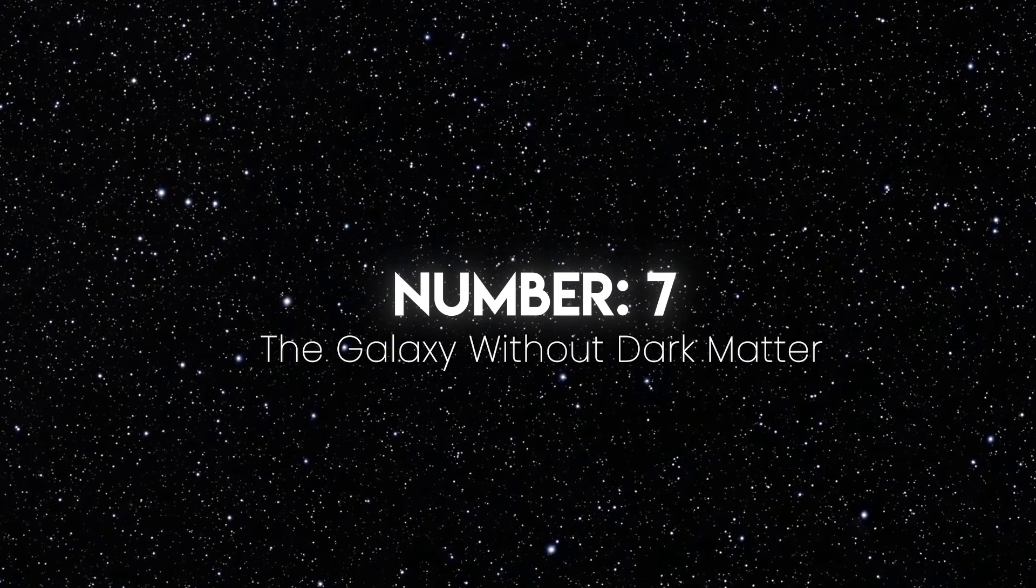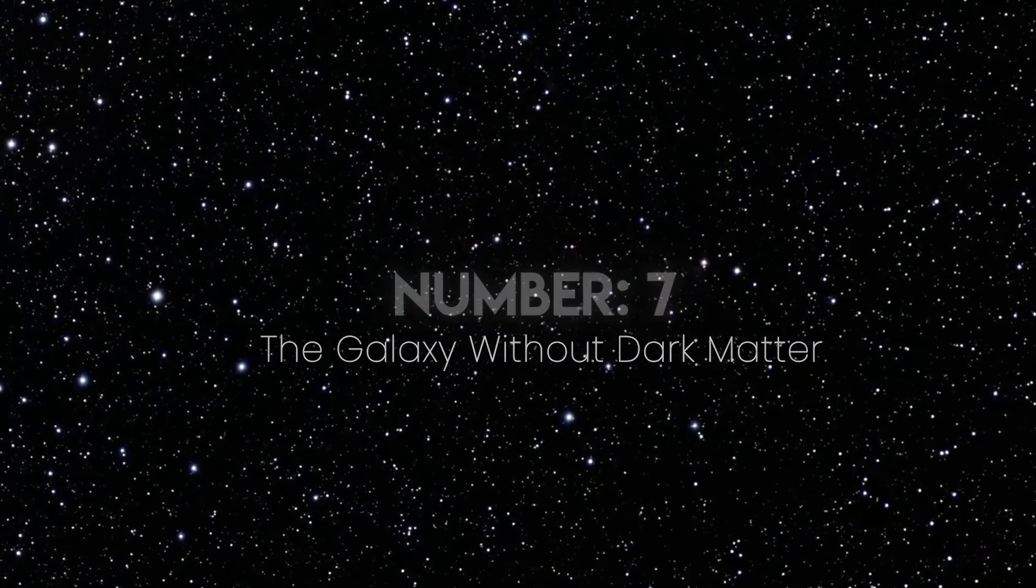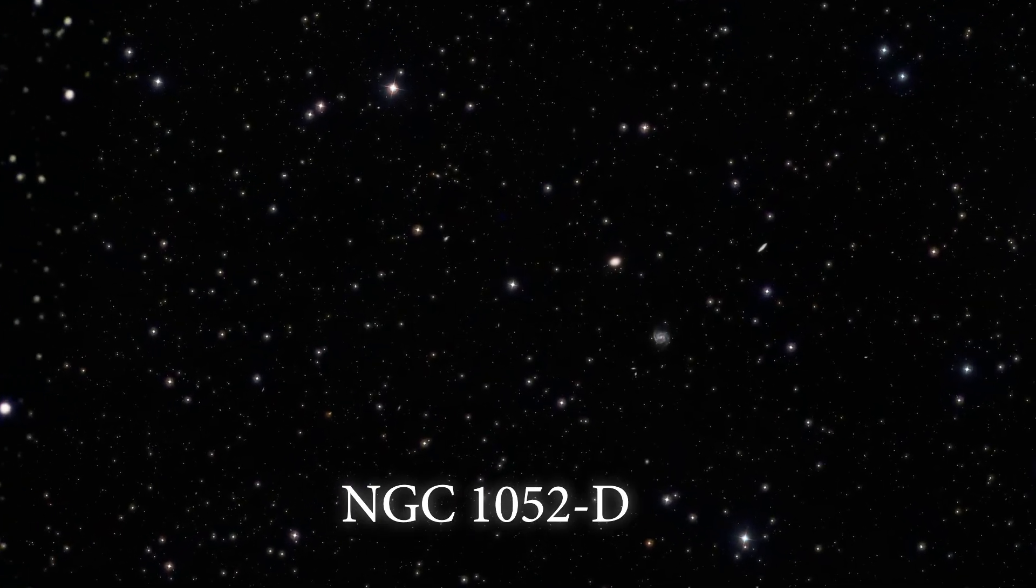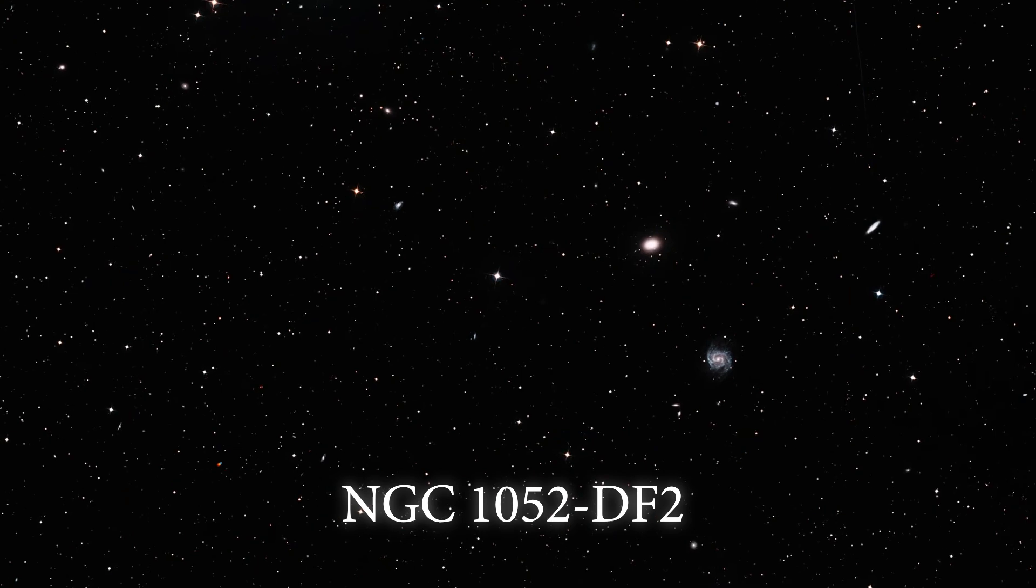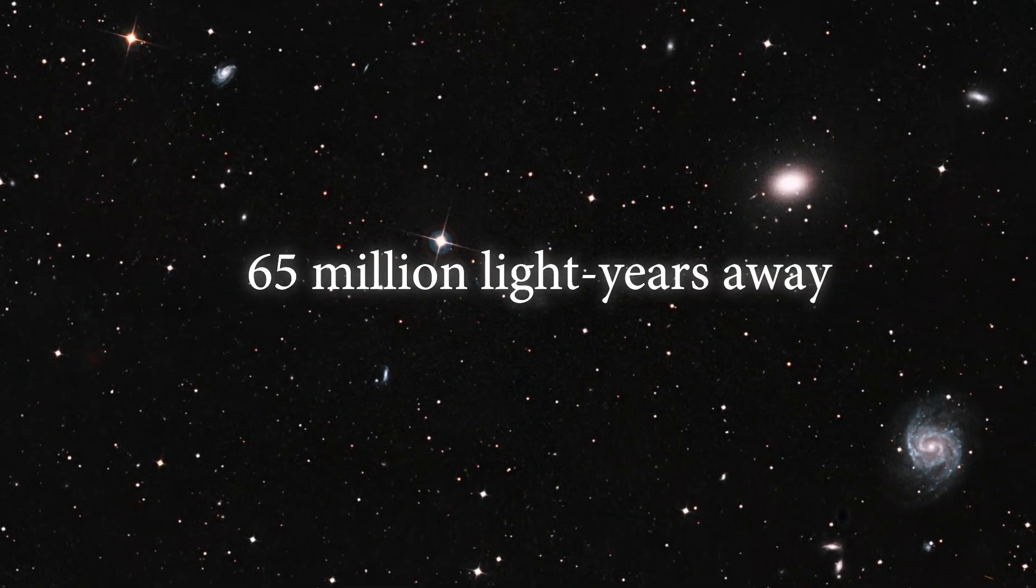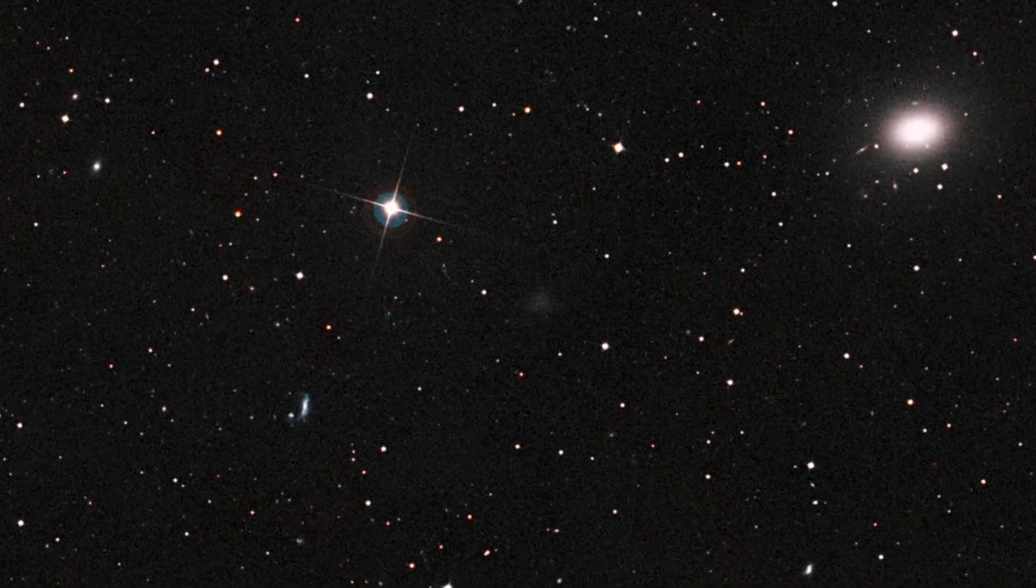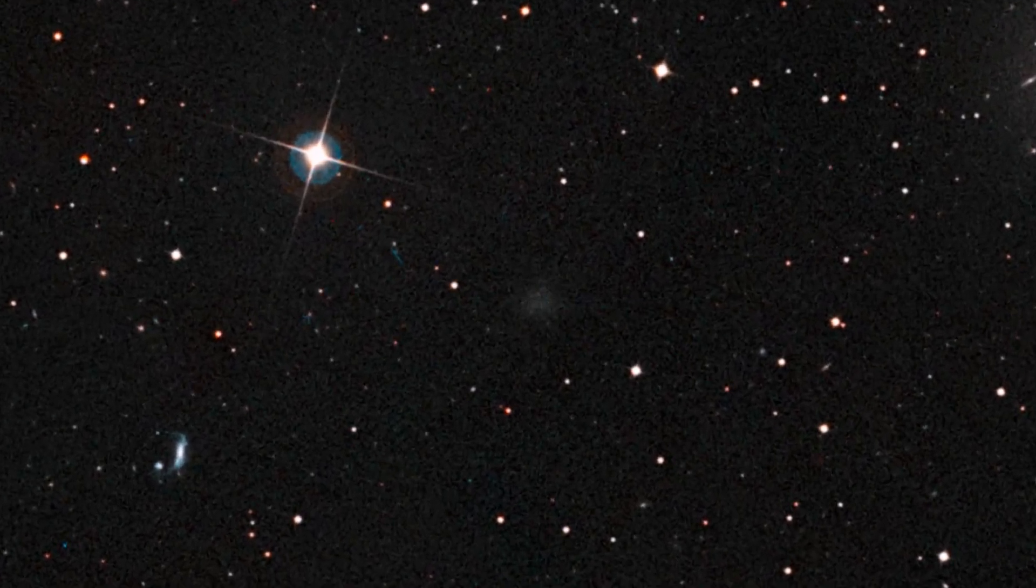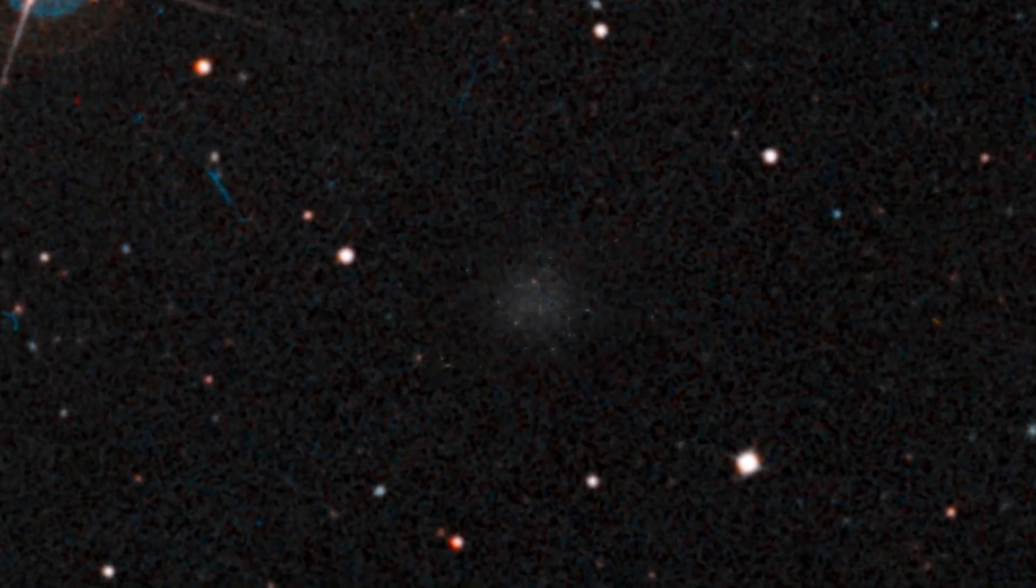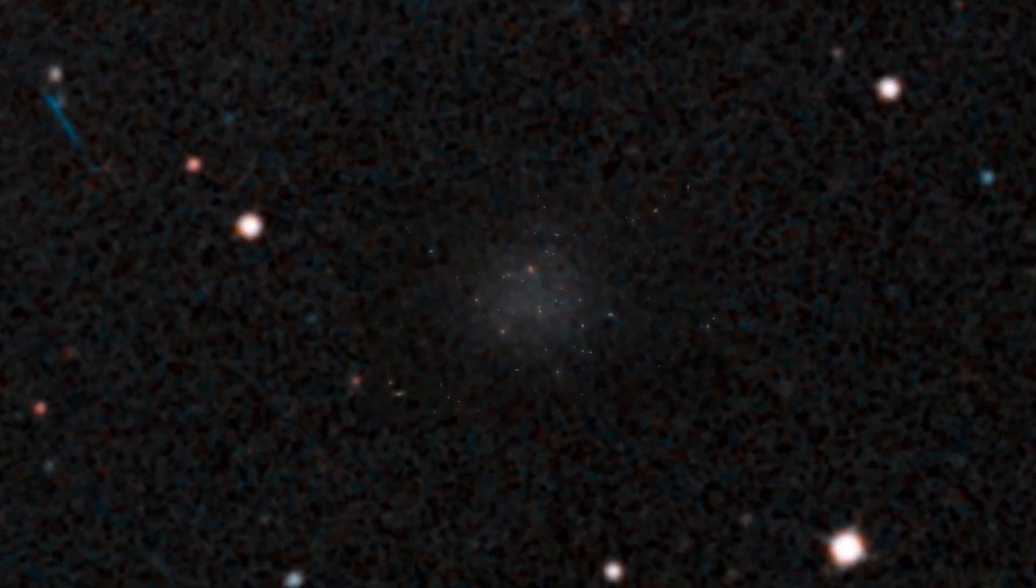Number 7: The galaxy without dark matter. Dark matter is the universe's invisible scaffolding, or so we thought. Then came NGC 1052-DF2, a faint ultra-diffuse galaxy 65 million light-years away with almost no dark matter. Galaxies are supposed to need dark matter to stay bound. Without it, they should just fly apart, but this one just hangs there. It's so diffuse that you could see right through it. The stars are spread out like scattered fireflies.